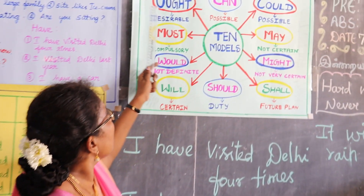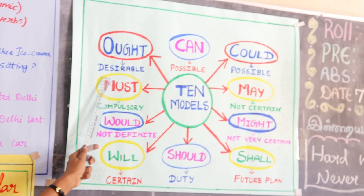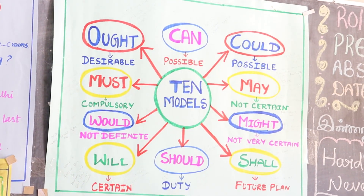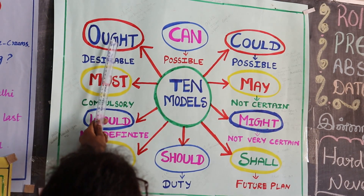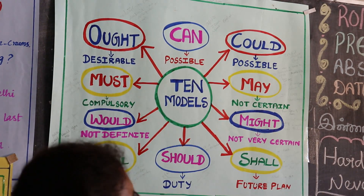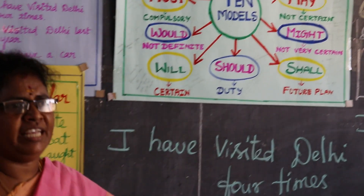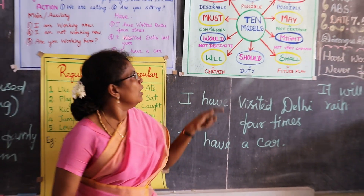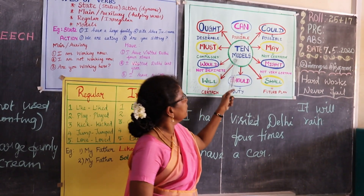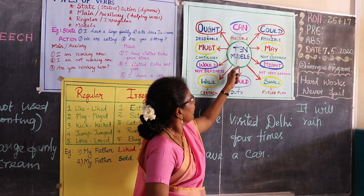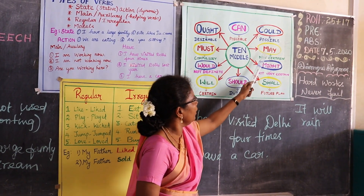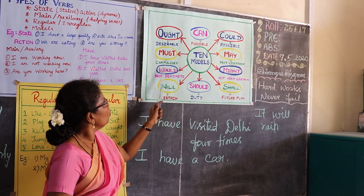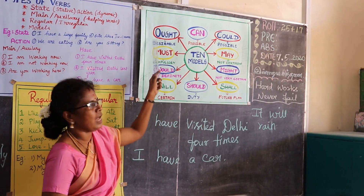The last modal is 'ought.' Ought is used for something desirable — it also shows duty. Example: 'You ought to submit your application on time.' So all ten modals are: can, could, may, might, shall, should, will, would, must, ought.